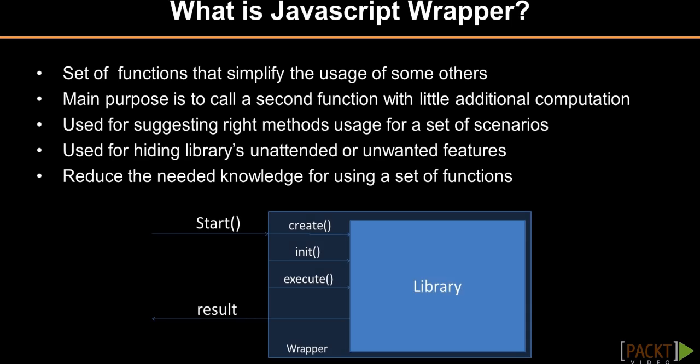A JavaScript wrapper is a set of functions that simplifies the usage of some other complex functions. A wrapper acts like a middle entity between the developer and the real objects that the wrapper handles. It could also be used to suggest detailed configuration for a subset of objects, depending on the scenario, or it could be used to hide unwanted features.